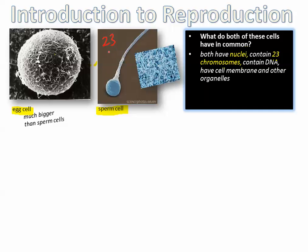There are 23 chromosomes in the nucleus of the egg cell, and 23 chromosomes in the nucleus of the sperm cell. When these two combine — egg plus sperm — 23 plus 23 makes 46. 46 is a very important number; it's like a magic number for humans. We have 46 chromosomes in every single one of our cells.